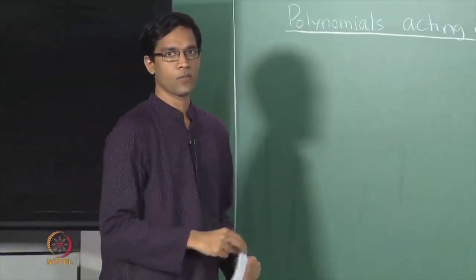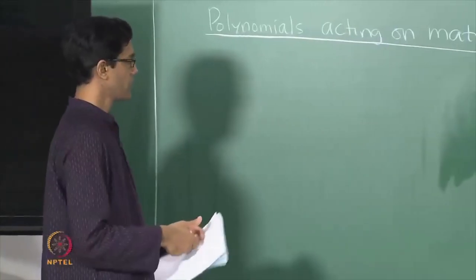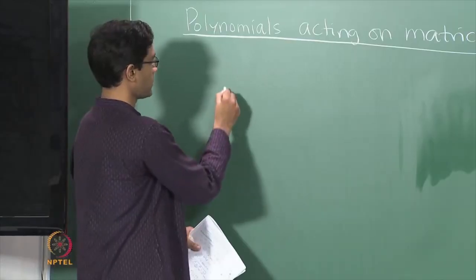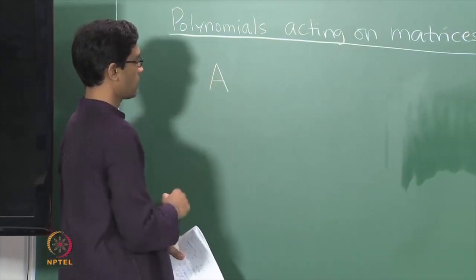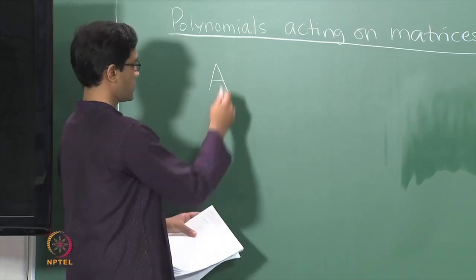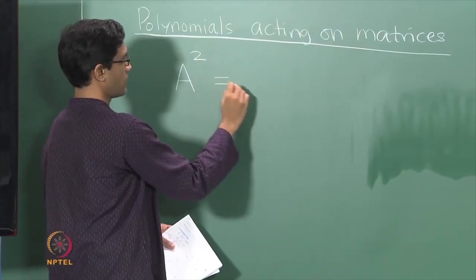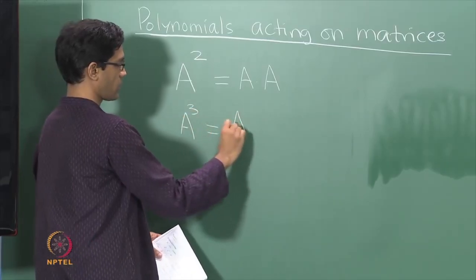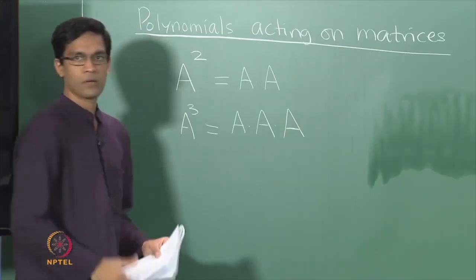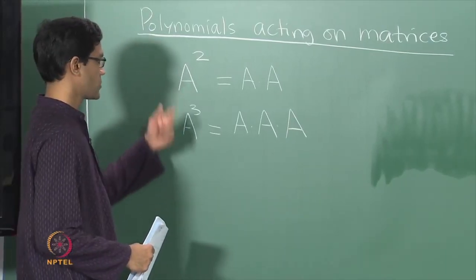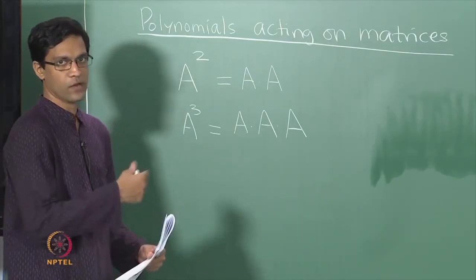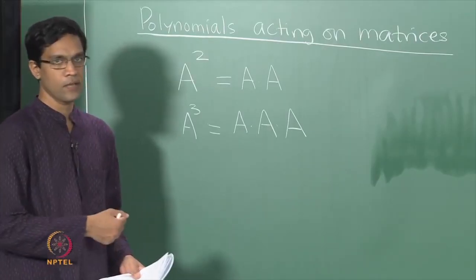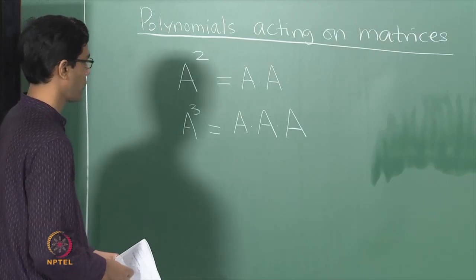Today we will talk about polynomials acting on matrices. Last time when we talked about the application of matrices in counting problems in graph theory, we had occasion to consider powers of a matrix. If you had a matrix A, it was natural to look at A squared, defined to be A times A, or A cubed, the product of A with itself three times. These counted, for instance, the number of paths of length 2 or 3 in a graph where A is the adjacency matrix. So powers made a natural appearance in counting problems.